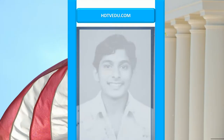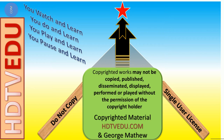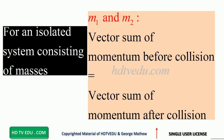Welcome to hdtvedu.com — direct and simple education in seconds. For an isolated system consisting of masses M1 and M2, the vector sum of momentum before collision is equal to the vector sum of momentum after collision.